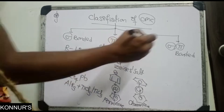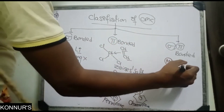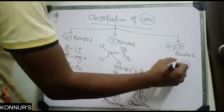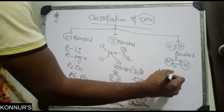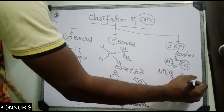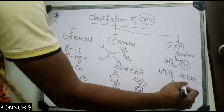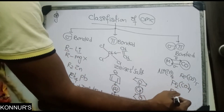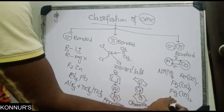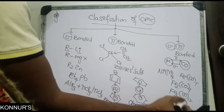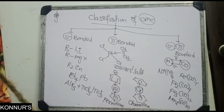For sigma-and-pi bonded OMC, the best example is metal carbonyls with carbon monoxide, where the metal donates via sigma bond and CO donates back via pi bond. Famous examples include Ni(CO)4, Fe(CO)5, Fe2(CO)9, Fe3(CO)12, and Mn2(CO)10 — these are all examples of sigma-and-pi bonded OMC.